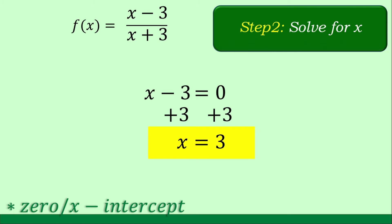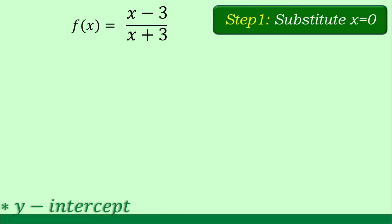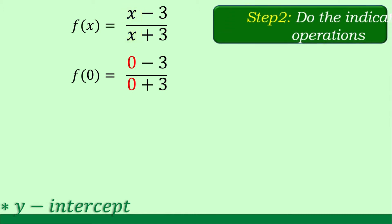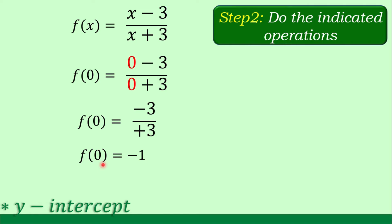How about the y-intercept? To find it, step one is to substitute x with zero. So we substitute x with zero in the rational function, giving us zero minus 3 over zero plus 3. Step two: perform the indicated operation. Zero minus 3 gives negative 3, and zero plus 3 gives positive 3. Dividing negative 3 by positive 3, the result is f(0) is equal to negative 1, and this is our y-intercept.